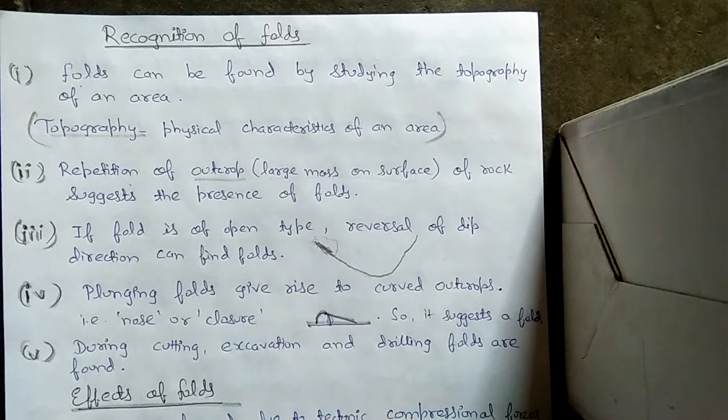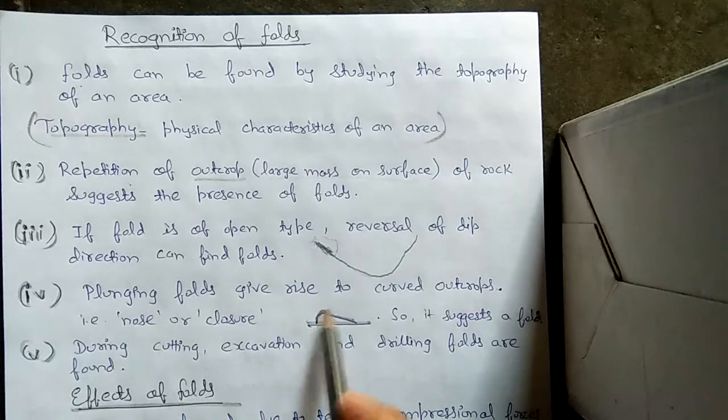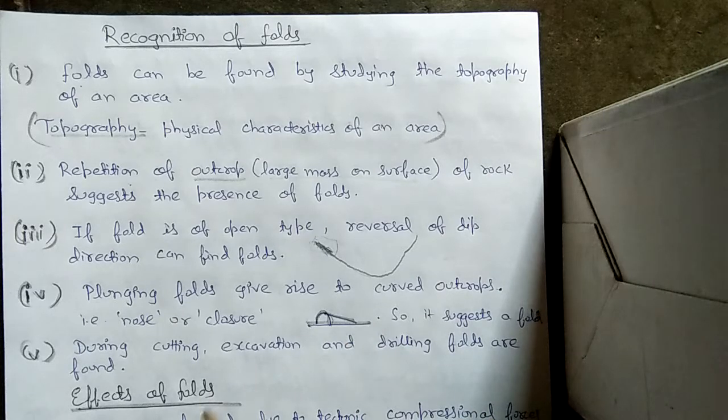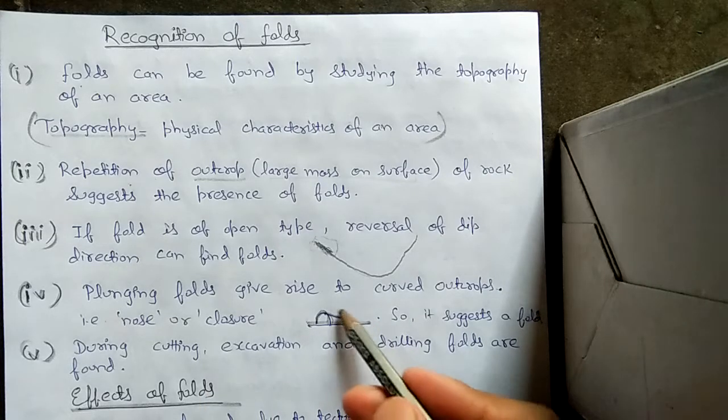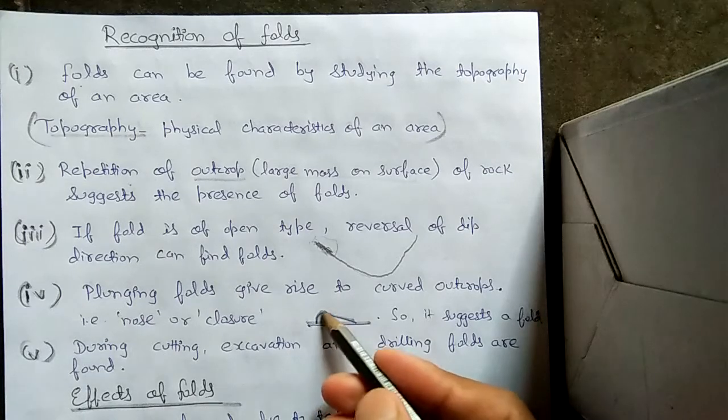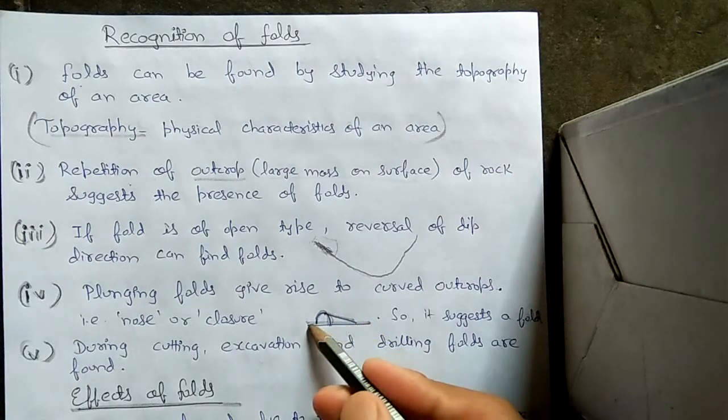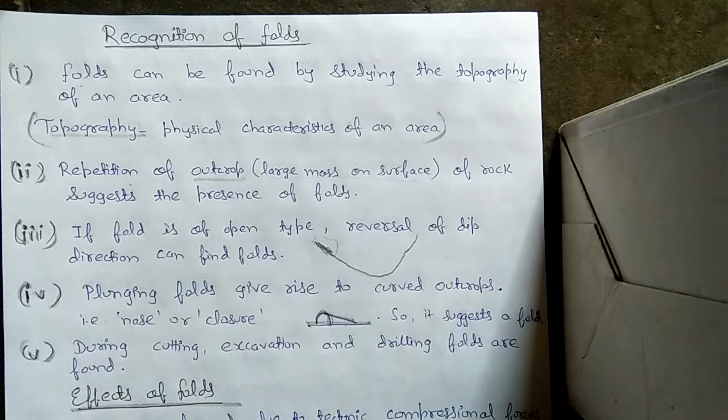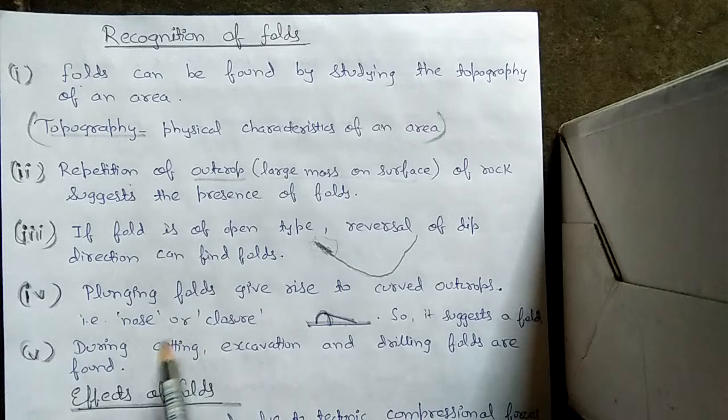Plunging folds give rise to curved outcrop. A plunging fold is a fold which has an inclined axis. If we see a curved outcrop, a curved large mass of rock on the surface, it suggests that there is a plunging fold present. This curved outcrop is called nose or closer.